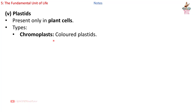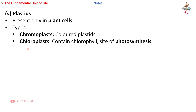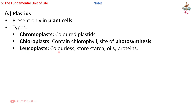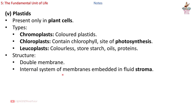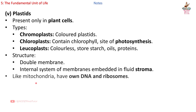5th — Plastids: present only in plant cells. Types: chromoplasts (colored plastids), chloroplasts (contain chlorophyll, site of photosynthesis), and leucoplasts (colorless, store starch, oils, proteins). Structure: double membrane, internal system of membranes embedded in fluid called stroma. Like mitochondria, plastids have their own DNA and ribosomes.